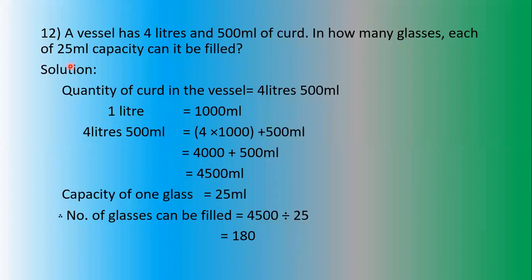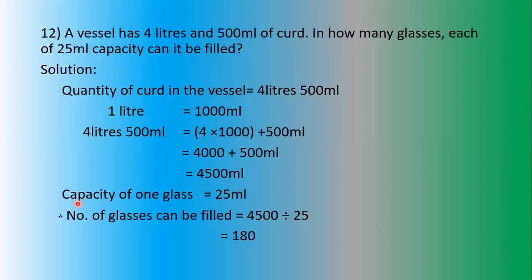Now the last question. A vessel has 4 liters and 500ml of curd. In how many glasses, each of 25ml capacity, can it be filled? Vessel means container. Quantity of curd in the vessel is 4 liters 500ml. Since 1 liter is equal to 1000ml, we do the conversion: 4 liters 500ml equals 4 × 1000 plus 500ml — that is 4500ml. Capacity of one glass is 25ml.